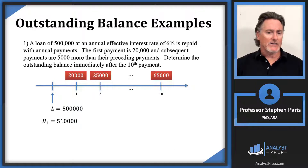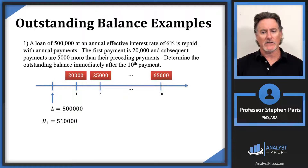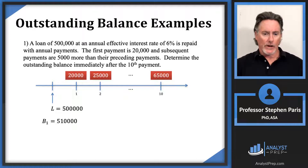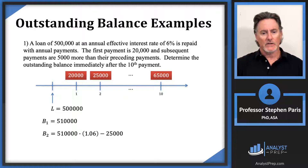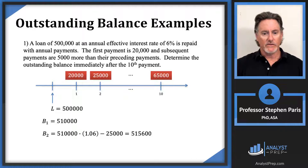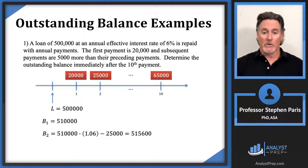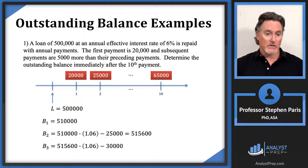We could continue finding balances step by step. The balance at time 2 is the balance at time 1 accumulated — $510,000 times 1.06 — minus the $25,000 payment, giving $515,600. Still in negative amortization in the second year. Going through the same process for the third year, the balance at time 3 is about $516,000 — it went up a bit more, though the increasing payments are helping.